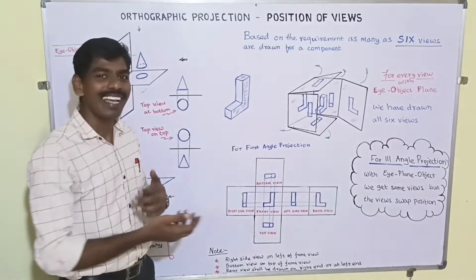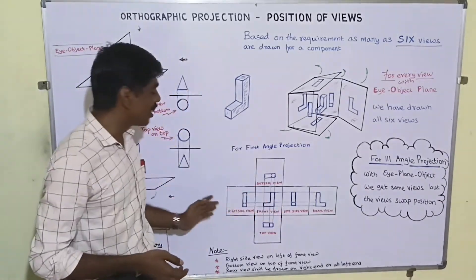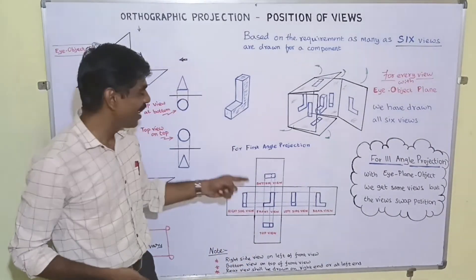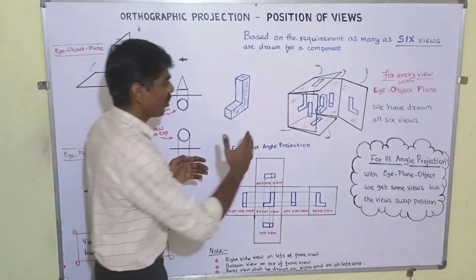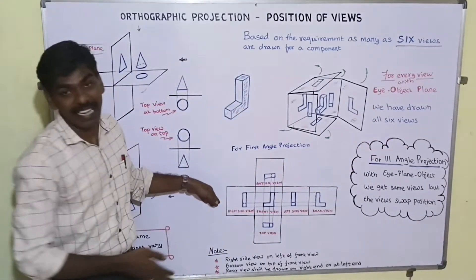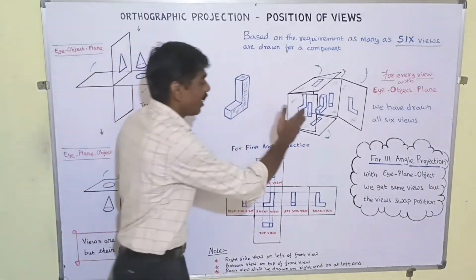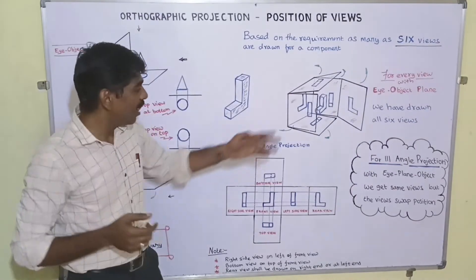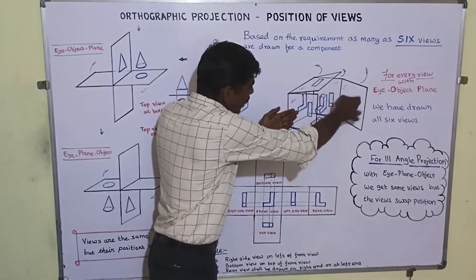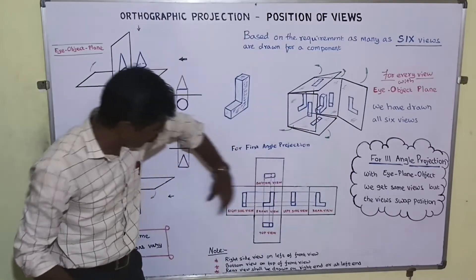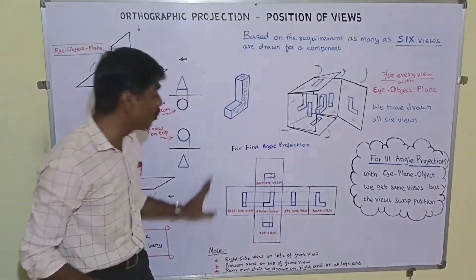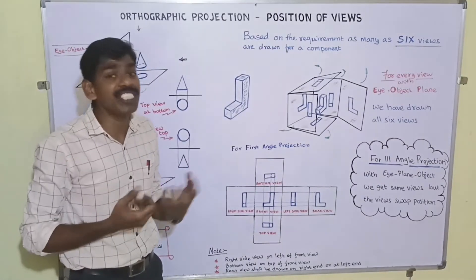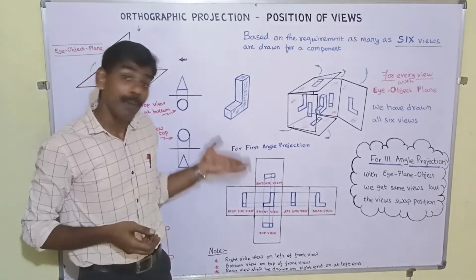The left side view comes to the right, and the rear view comes to the right extreme end. To note: the right side view is at the left; the left side view is on the right; the top view is at the bottom; the bottom view is at the top. The rear view can be drawn either at the right extreme end or the left extreme end. So all six views are drawn, giving us a clear understanding of the object.